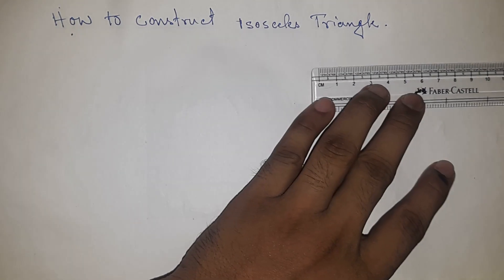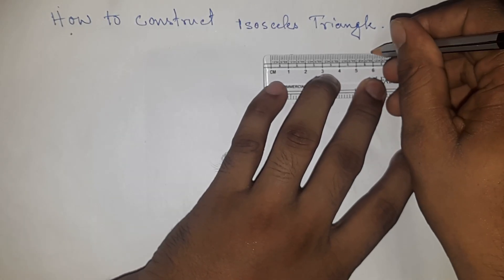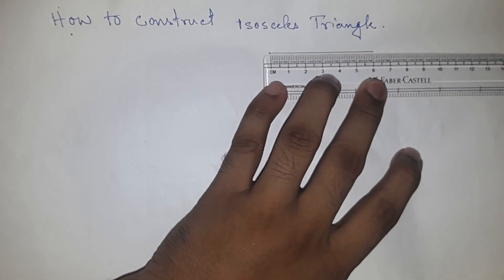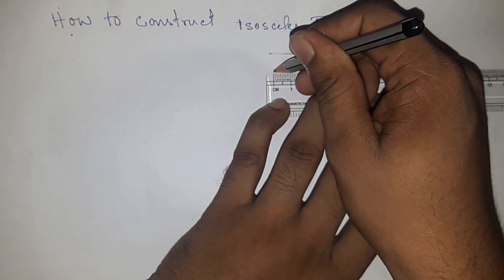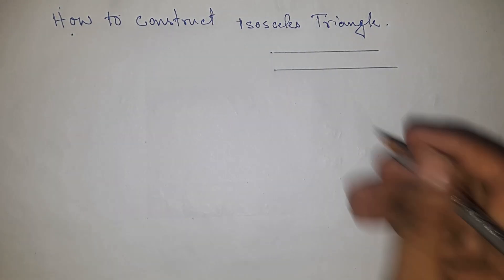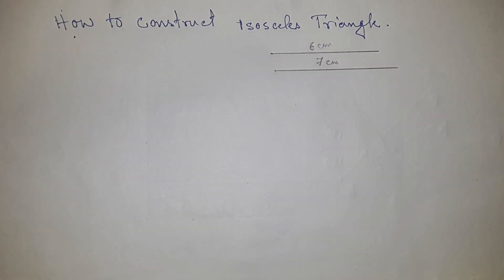First, we're drawing two sides of the triangle. The first one is 6 centimeters and the second side is 7 centimeters.